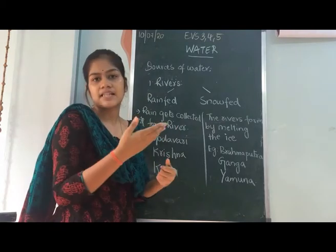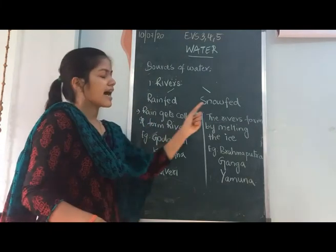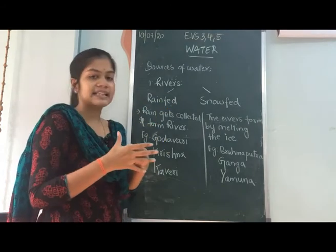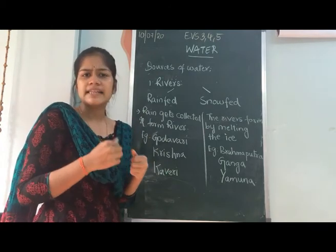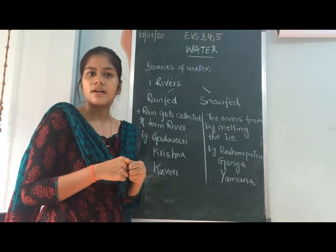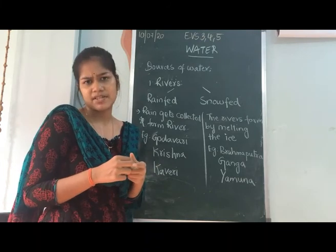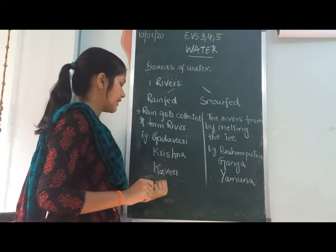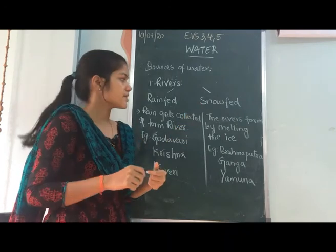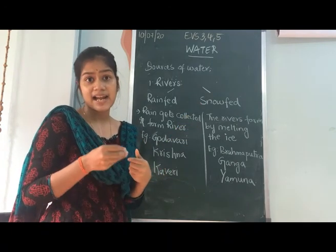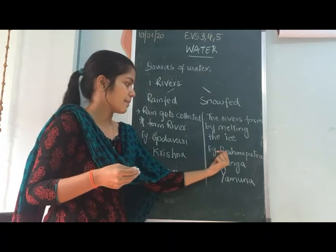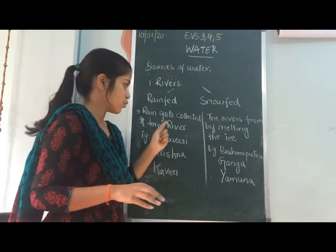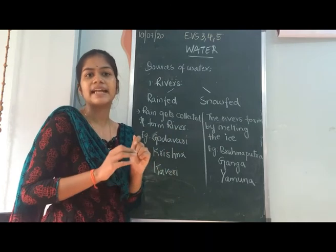Rivers are classified into two types based on their source. Rain-fed rivers are formed when rain falls from the sky and gets collected in the rivers; you can only see them in the rainy season as they dry up in summer. Examples are Godavari, Krishna, and Kaveri. Snow-fed rivers are formed by melting ice from ice mountains; examples are Brahmaputra, Ganga, and Yamuna.